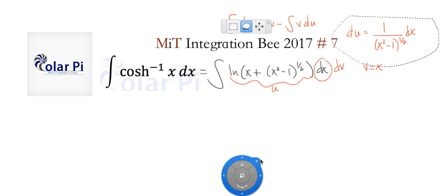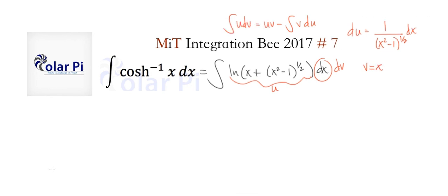So uv is gonna be x times arc cosh x, where again remember this natural log expression is arc cosh x.